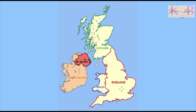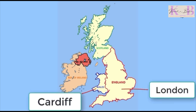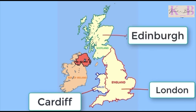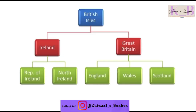Each country has its own capital. The capital of England is London, the capital of Wales is Cardiff, the capital of Scotland is Edinburgh, and the capital of Northern Ireland is Belfast. Now let's see this whole concept with the help of a diagram.